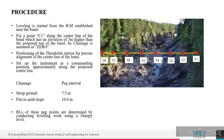Position the theodolite station for precise alignment of the centerline of the bund. Set up the instrument at a commanding position approximately along the proposed centerline. For steep ground, a peg interval of 7.5 meters is recommended. For flat to mild slope, a distance of 10 meters is used. The RL of each point is then obtained using the dumpy level.